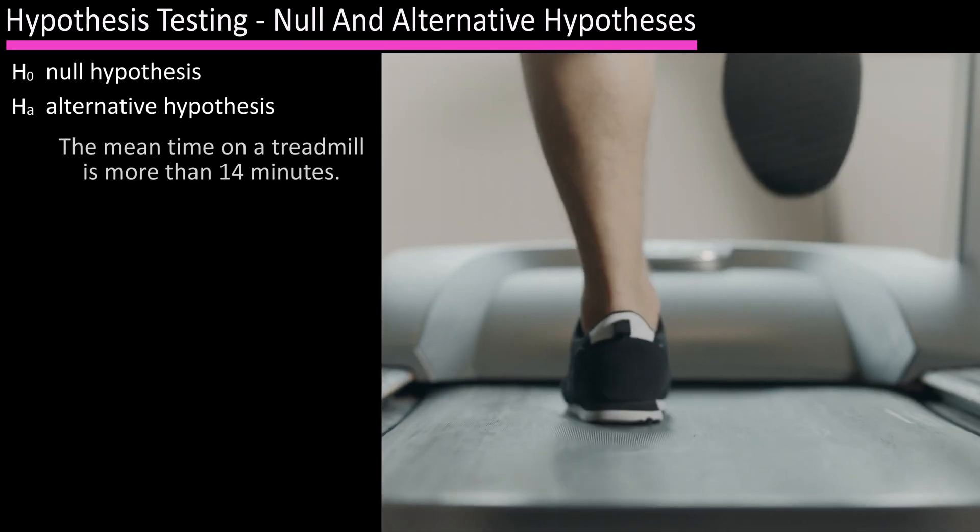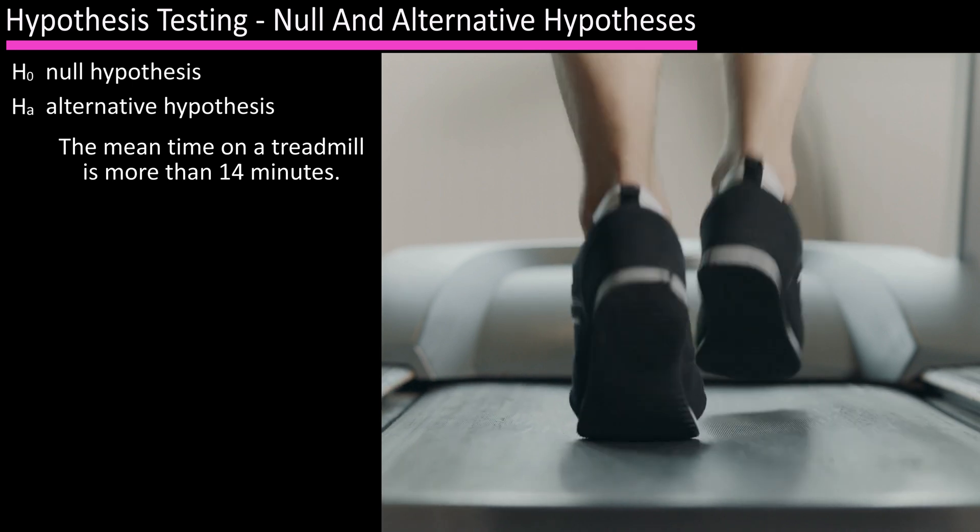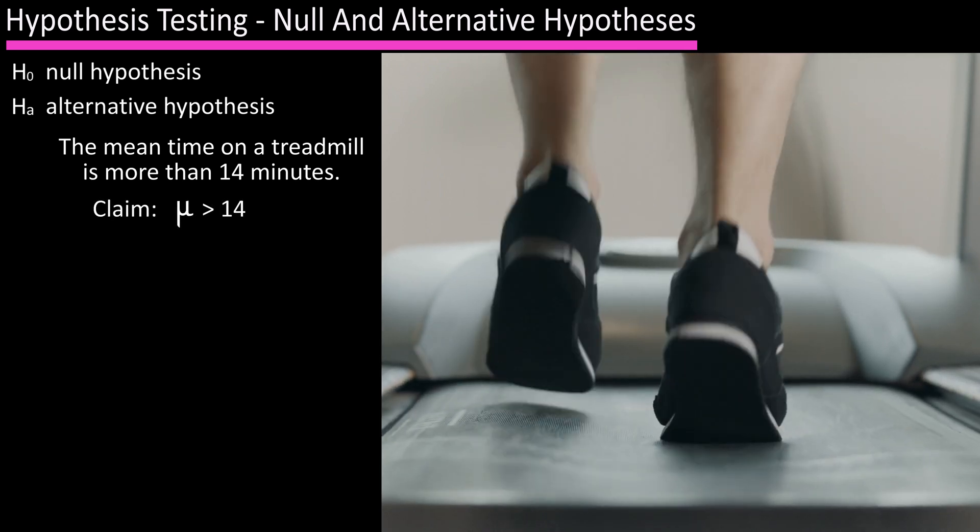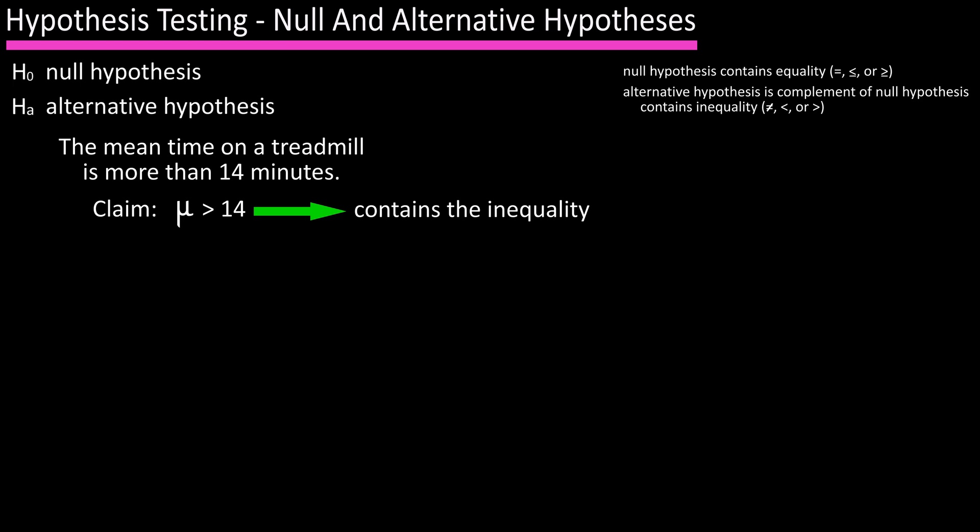A recent report stated the mean time spent on a treadmill at the gym is more than 14 minutes. So the claim is that mu is greater than 14. The alternative hypothesis contains the inequality so H sub a is mu greater than 14, and the complement of that is mu is less than or equal to 14, and that is our null hypothesis again with the equality in this statement.